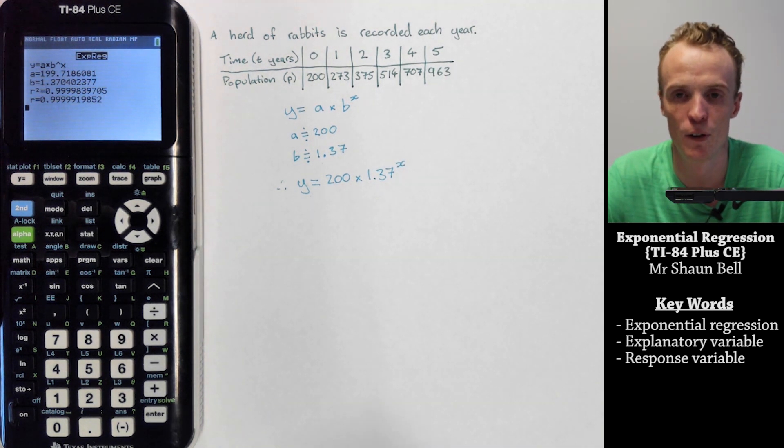Now in the next video I'm going to interpret what the A and the B value actually represent in context to the problem.